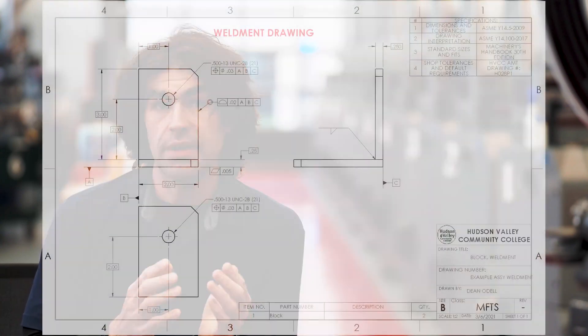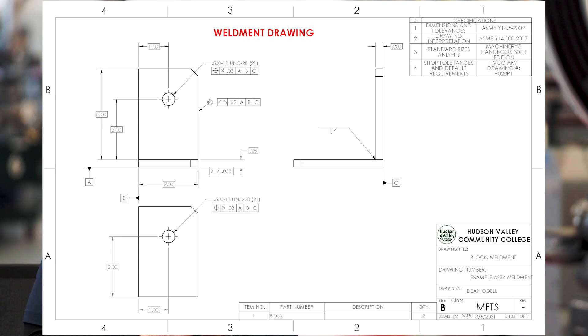The answer to avoiding problems like this at the assembly level is by making what is known as a weldment drawing. You don't even have a separate detail drawing of the block — you just detail everything on the assembly drawing. You put the final requirements of the part on the assembly drawing, so the welder, machinist, or whoever is making this part knows everything they need to know. They can put it together and it will meet the final requirements in a way it would not if you had a separate detail drawing and assembly drawing.